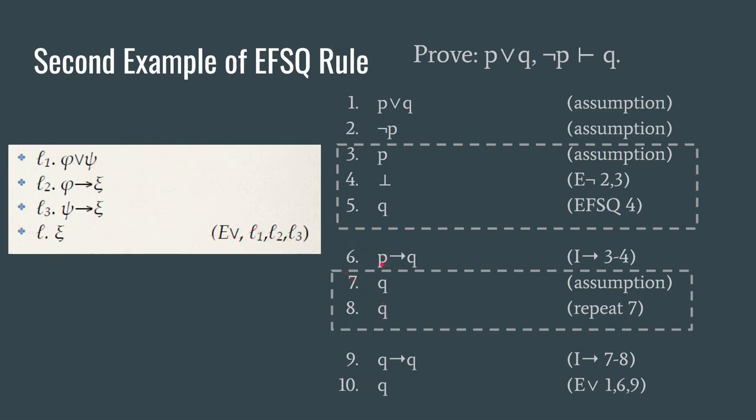We have P→Q on line six. It's not inside a box so we can keep using it. And we have Q→Q on line nine. It's not inside a box so we can keep using it. Well now we can use the elimination of disjunction rule to get Q all by itself.